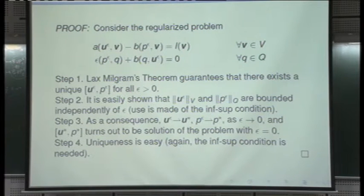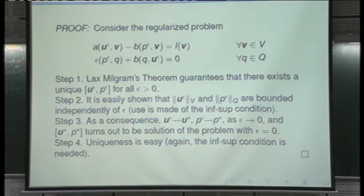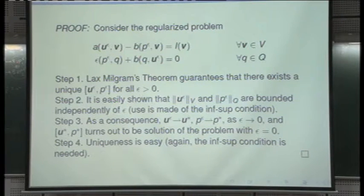This matrix — the Schur complement — must have rank equal to the number of pressure unknowns for the system to have a unique solution. Since its rank is at most the rank of K — which equals the number of velocity degrees of freedom — the conclusion is: the number of velocity degrees of freedom must be greater than or equal to the number of pressure degrees of freedom. This was the argument by Zienkiewicz and Taylor.